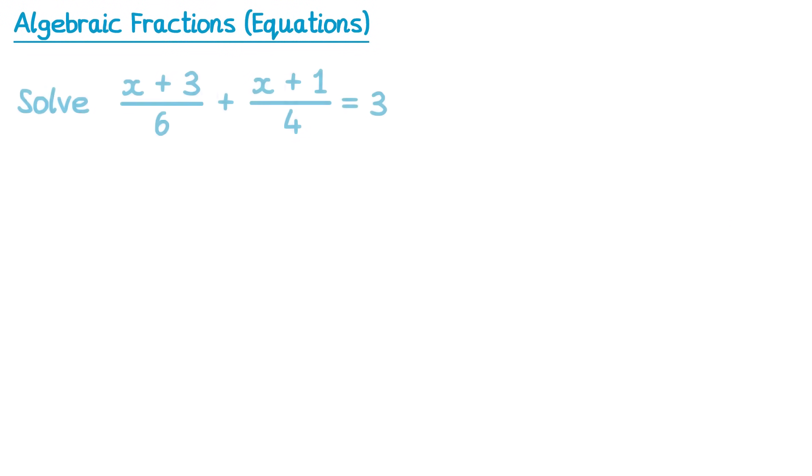So let's take an equation that has some algebraic fractions in it. What we're going to do is focus on the left hand side first of all and try and combine these into one fraction. To do this we need to make sure we have a common denominator. At the moment the denominators are 6 and 4, the lowest common multiple of these is 12. So we could rewrite the left hand side as two fractions that are both over 12.